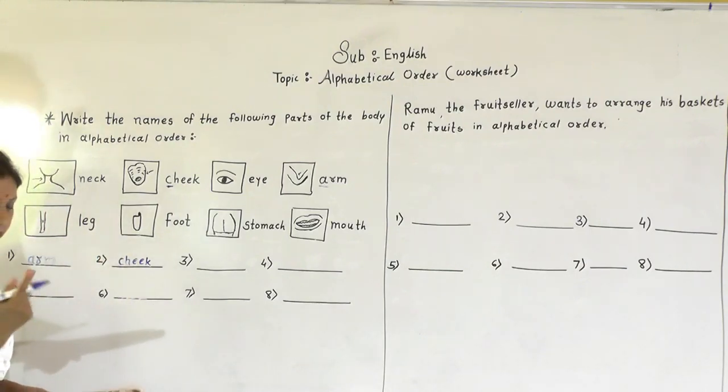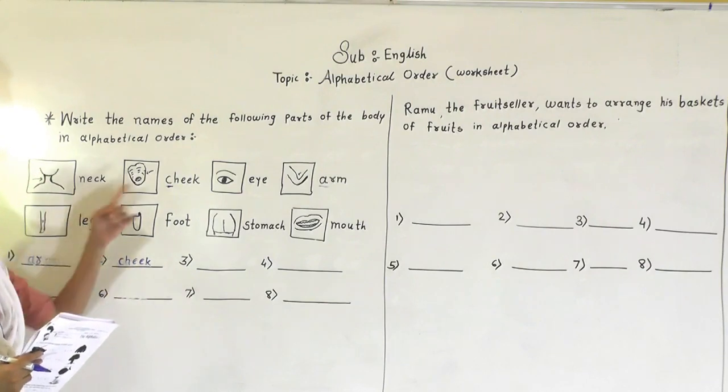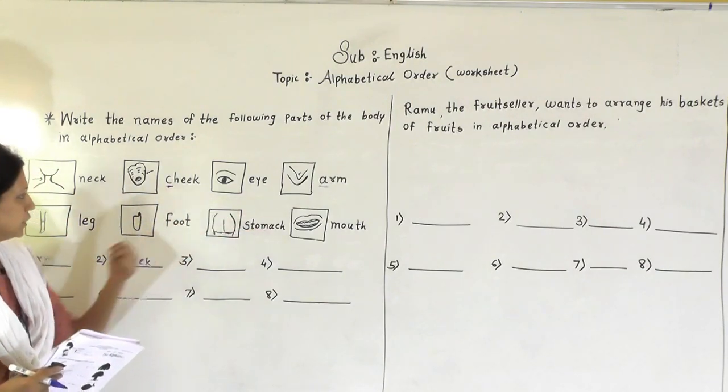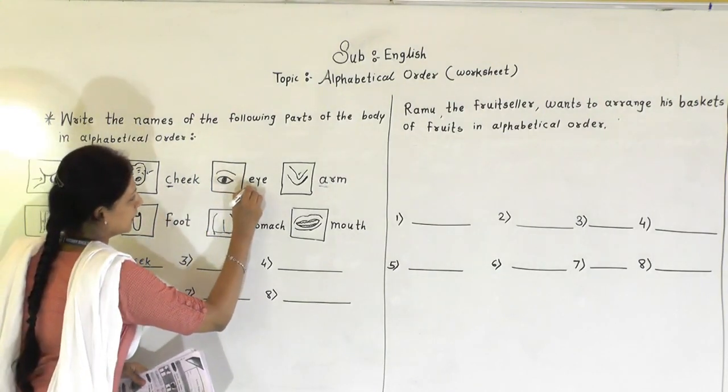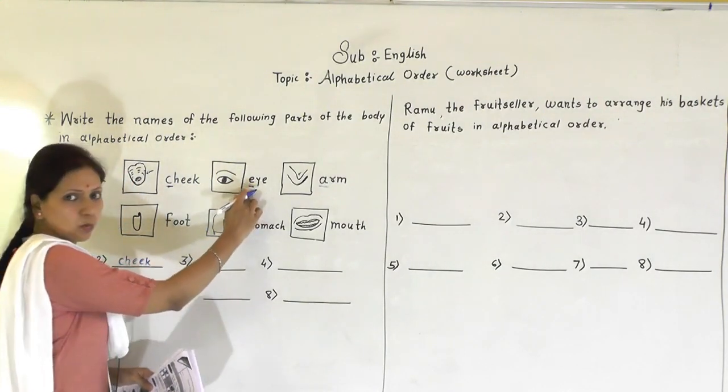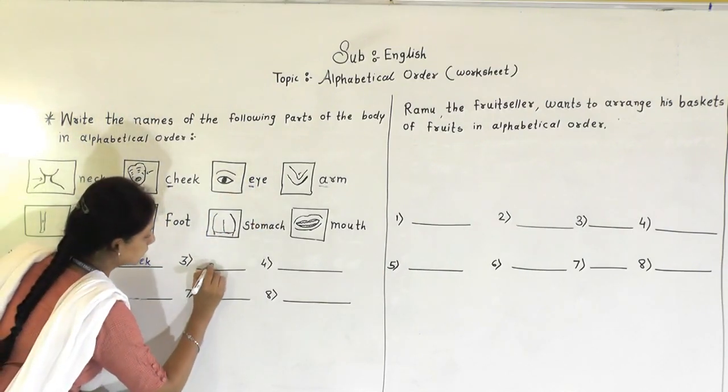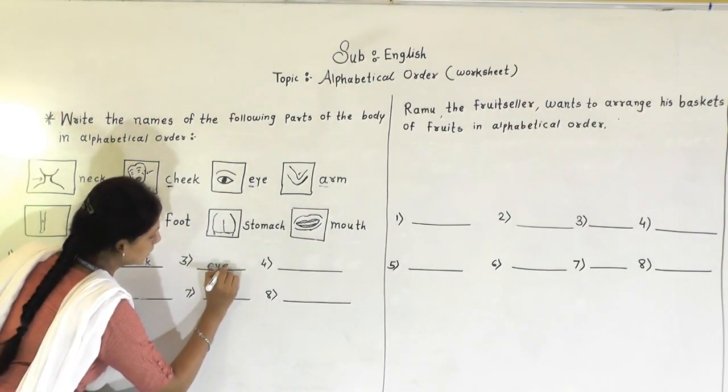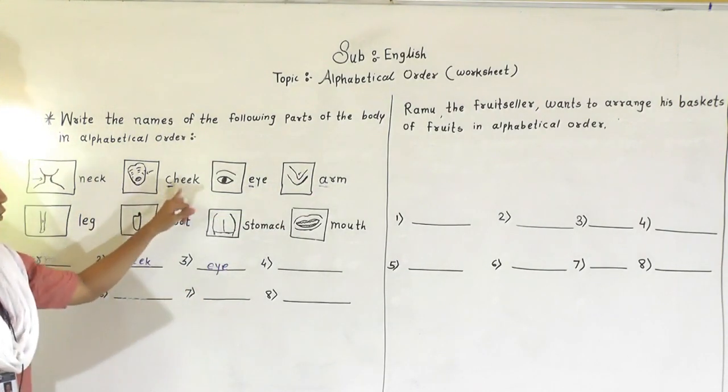We got the two letters. A, B, C. Now D. Is it here D? No. A, B, C, D, E. Okay. Here we got E letter. So next word is eye. So here you write down E-Y-E. Okay.